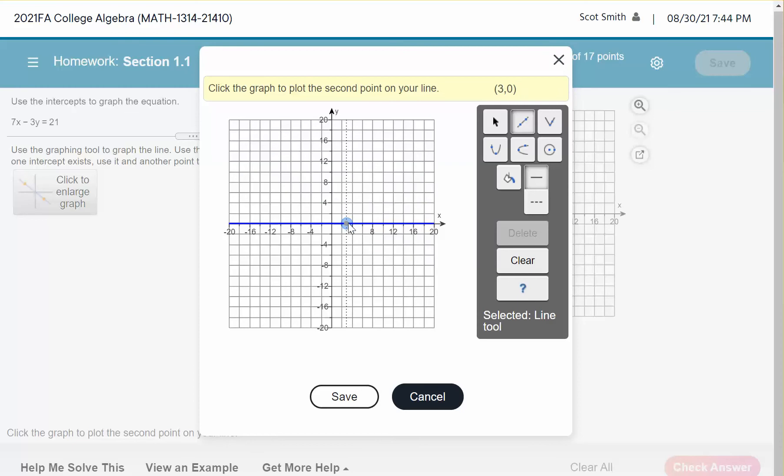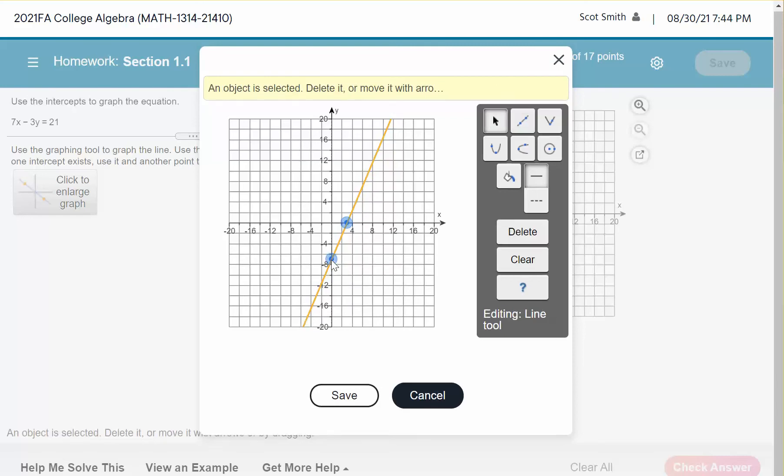And by the way, it shows you that you're at 3, 0 in the yellow there. And then we want to go to 0, negative 7. So I'm just dragging this line to 0, negative 7. See, this would be 0, negative 6, and you can see now in the yellow we're at 0, negative 7. So click.